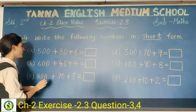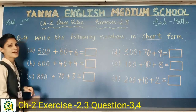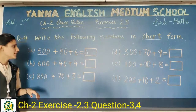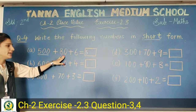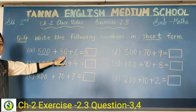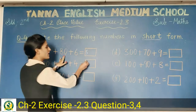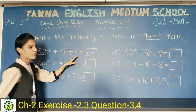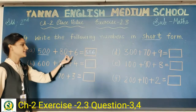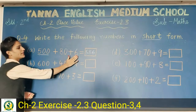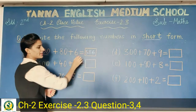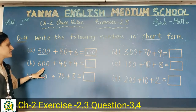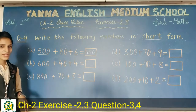Number one: five hundred eighty and six — write this in short form. We have five hundred, so write five. Then we have eighty — eighty means eight tens — so at tens place write eight. Then at ones place we have six. Together: five hundred and eighty-six.